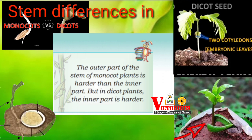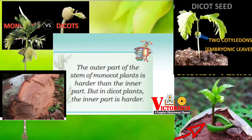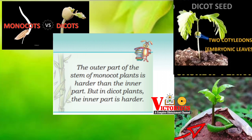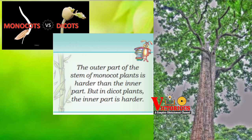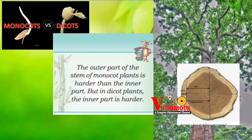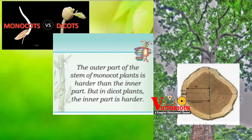Now let's look at stem differences in monocots and dicots. The outer part of the stem of monocotyledons is harder than the inner parts. But in dicot plants, the inner part is harder than the outer part.